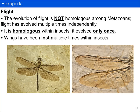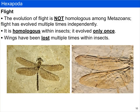Any discussion of insects should involve some thinking about flight. Flight is not homologous among animals — it has evolved multiple times independently. Within insects, it evolved only one time, so it is homologous. However, insects have lost flight multiple times — there are flightless beetles, flightless flies, and flightless lepidopterans, etc. If you compare the morphology of wings among metazoans, the wings of bats or birds are clearly distinct from insect wings, so flight is still considered a synapomorphy of a subgroup of insects. But not all insects have wings, since entognathans don't.